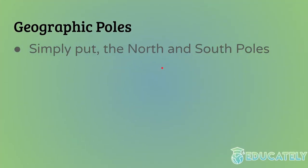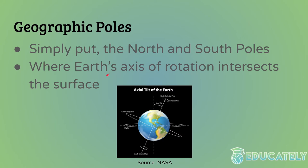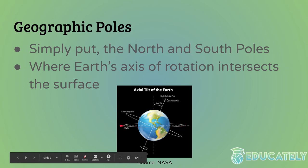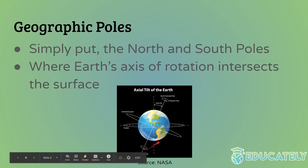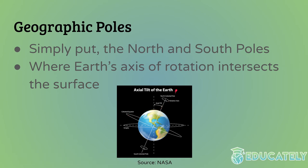Let's start with the geographic poles. Simply put, these are the north and south poles that most people talk about, but that's an ambiguous way of defining things. Scientifically speaking, the geographic poles are where Earth's axis of rotation intersects the surface. Earth's axis is tilted at an angle of about 23 degrees, and you can imagine an imaginary rod that impales Earth — it intersects one end and comes out on the direct opposite side. Those two intersection points are the geographic poles.